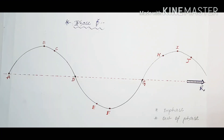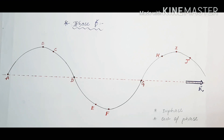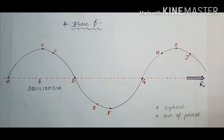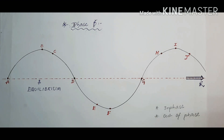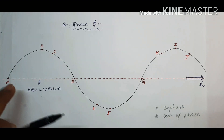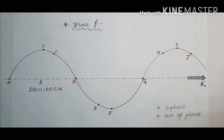Let's talk about points which are in phase and points which are out of phase. Point A and point G are in phase because they are at the same position and doing the same thing — both are at the equilibrium position and the wave is moving up at both points. However, point A and point D are completely out of phase: at point A the wave is moving up, but at point D the wave is moving down.